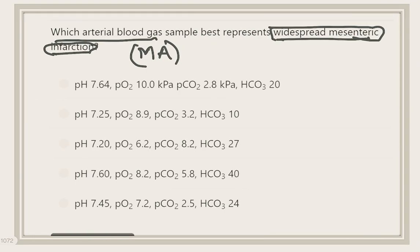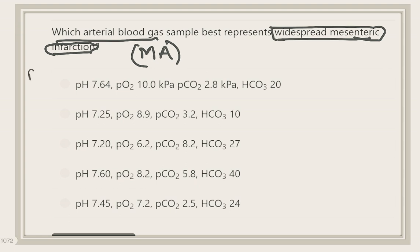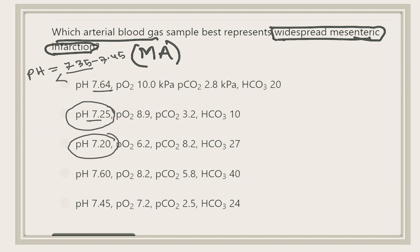First, let's look at the pH. The normal range is 7.35 to 7.45, so we need a pH less than 7.35. Option A is 7.464 — not less than 7.35. Option B is 7.25 — less than 7.35. Option C is 7.2 — also less than 7.35. Option D is 7.6 — not less than 7.35. So our answer lies within options B and C.